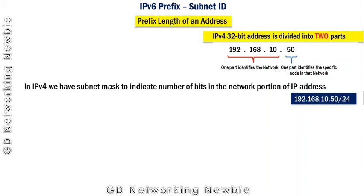For example, if we use CIDR notation — that is classless interdomain routing notation — this tells us that within this IPv4 address, 24 bits are being used to represent the network portion.